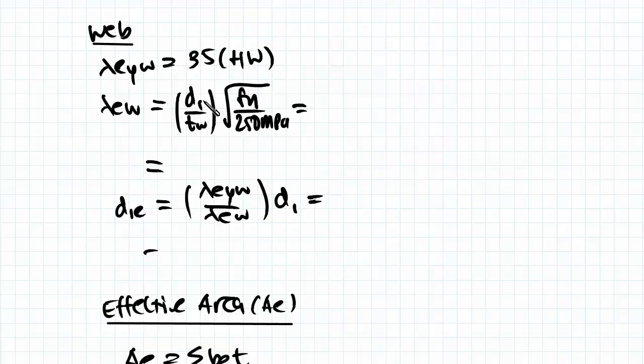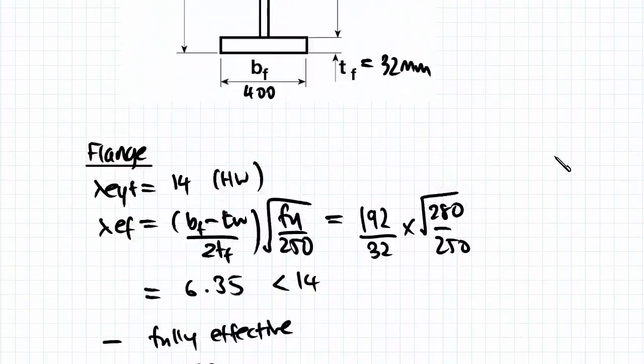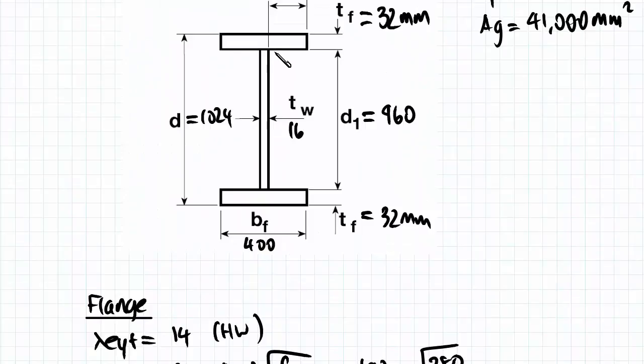And B in our case would be D1, which is the distance between the two flanges. So the clear distance between the other elements.